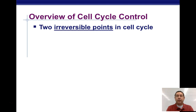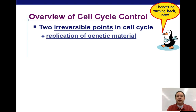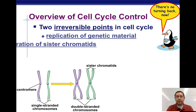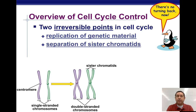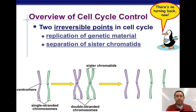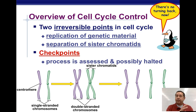So how is all this regulated? There are various points along the cell cycle where control can happen, and there are two irreversible points. Once you get past these points, we move on to the next step in the cell cycle. One of them is replication of genetic material — once you replicate the genetic material, you need to move on to the next step of cell division. The other is separation of the sister chromatids — when the sister chromatids divide, we need to finish that cell division process. There are various checkpoints along the way to make sure the cell is doing what it needs to do before it goes on to the next step, ensuring things are done correctly, and if not, it can stop the cell cycle.